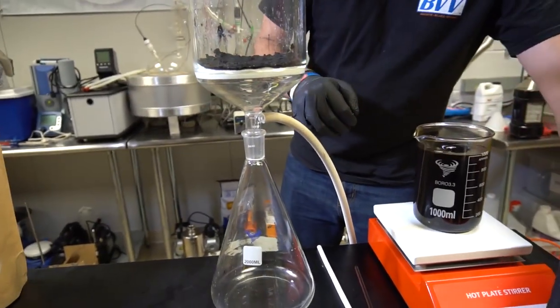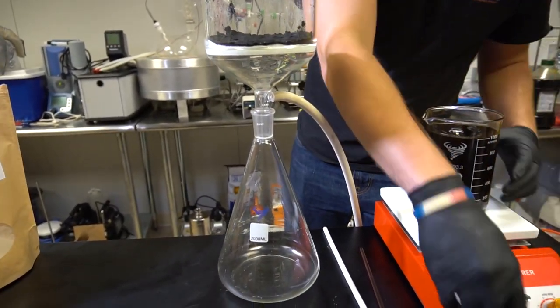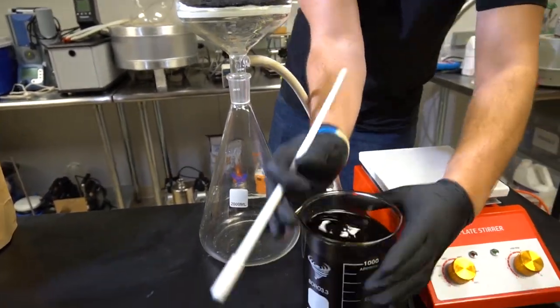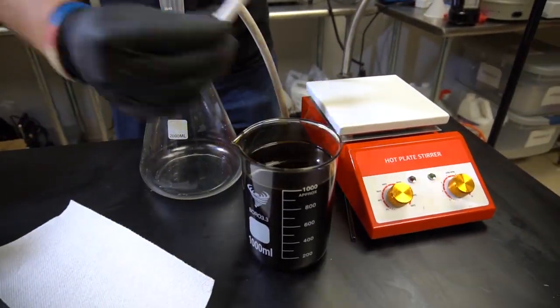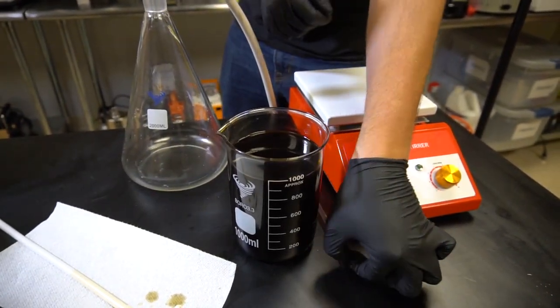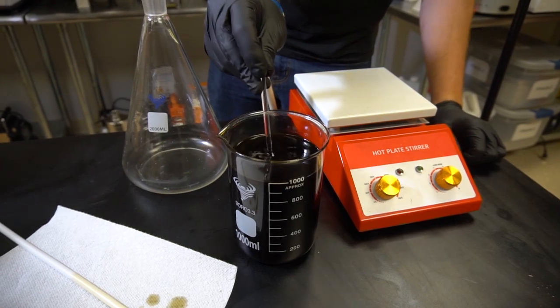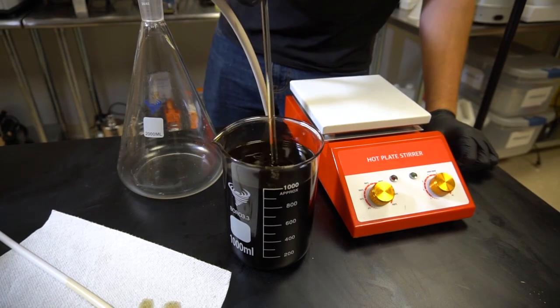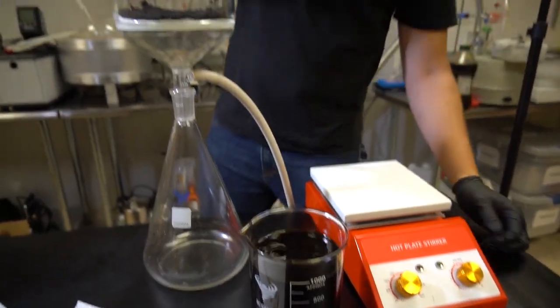I'll turn off my stir plate over here. I have a stir bar in there I need to get out first. Now just to make sure, I'm going to check the consistency with the stirring rod. And it seems just fine. So, I'm ready to pour it in the top of my Buckner funnel.